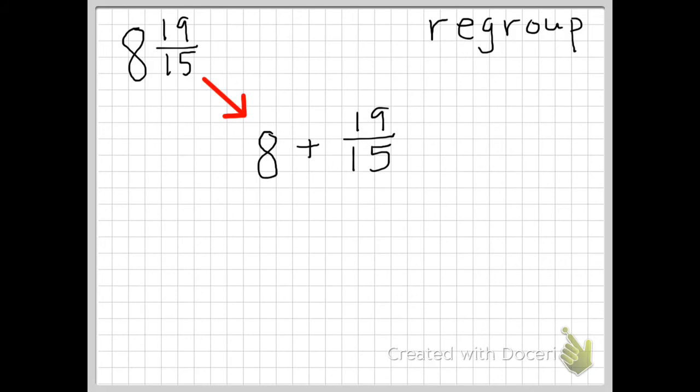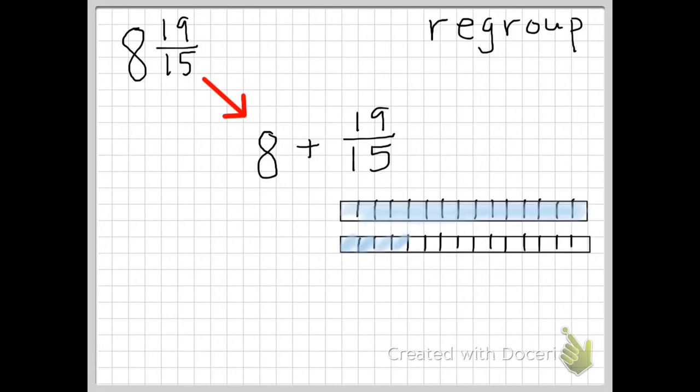So now the question is how do I convert this improper fraction into a mixed number. For this problem I'm going to go ahead and use an area model to represent the conversion from improper to mixed number. I've created an area model representing 19 fifteenths. So first off I have this first bar which represents one whole and it's partitioned into fifteenths. So I don't have 19 fifteenths yet.